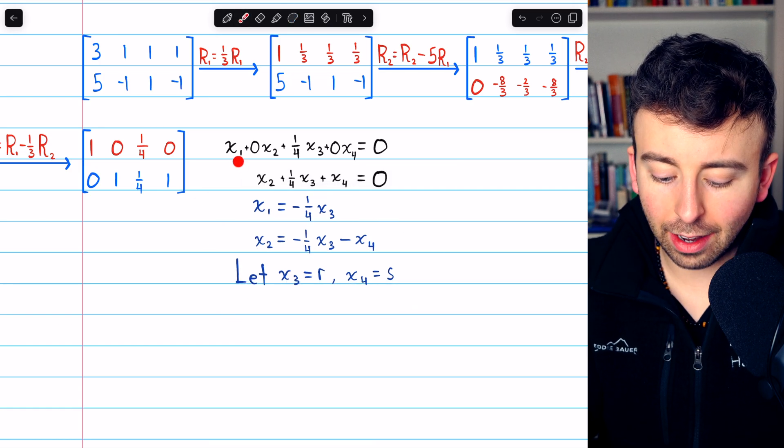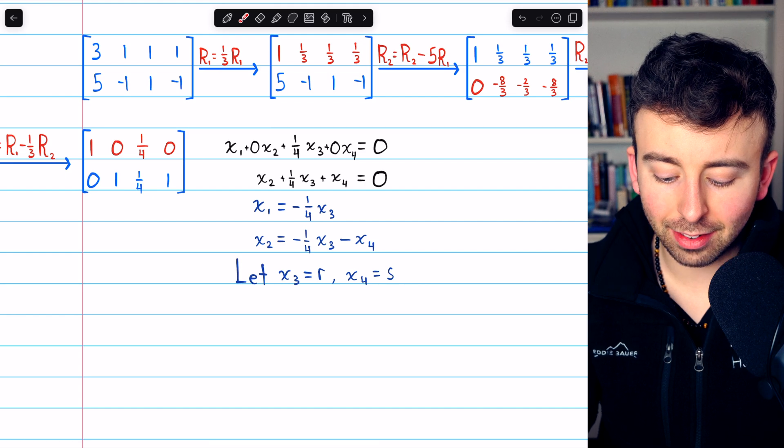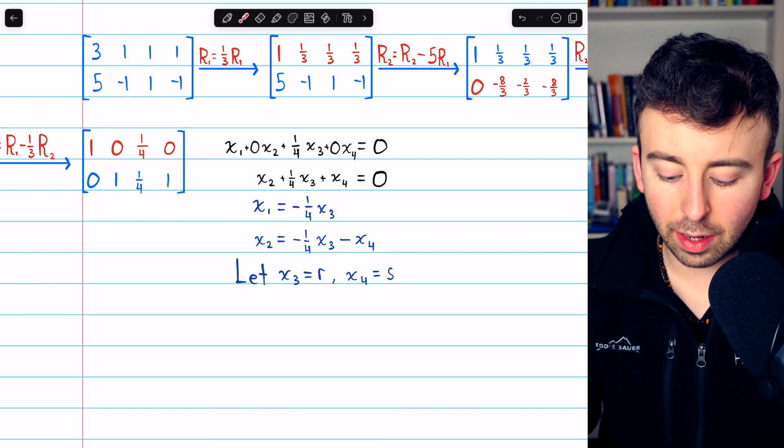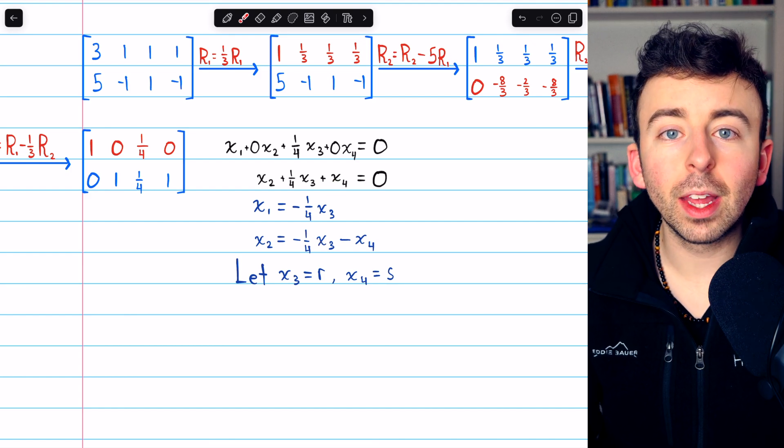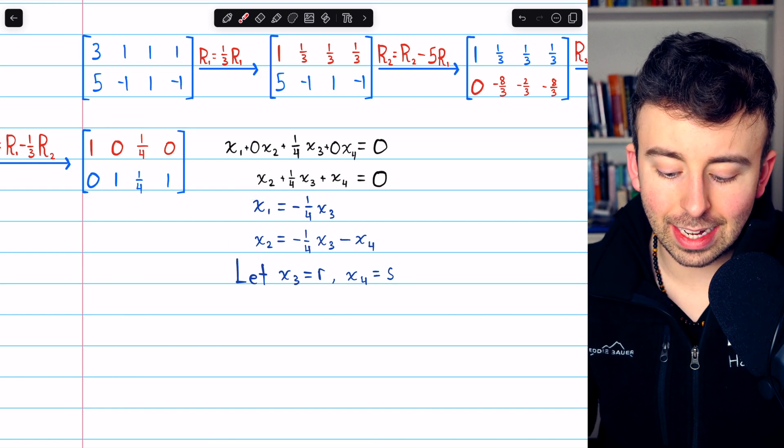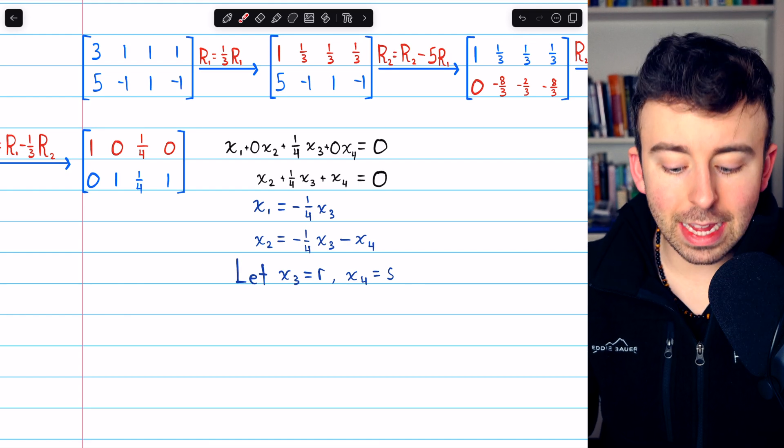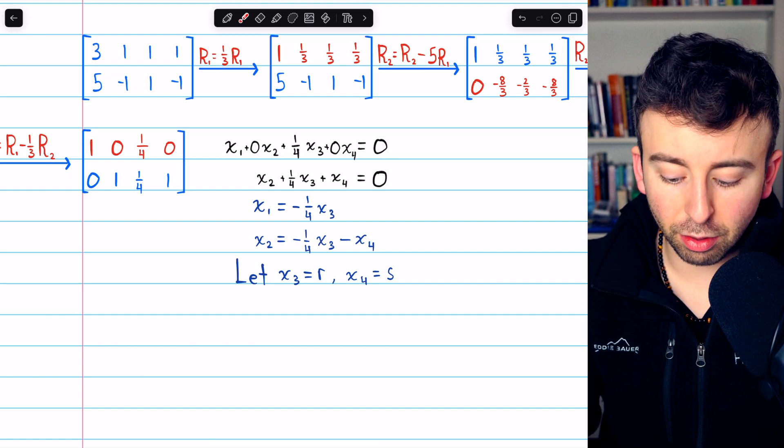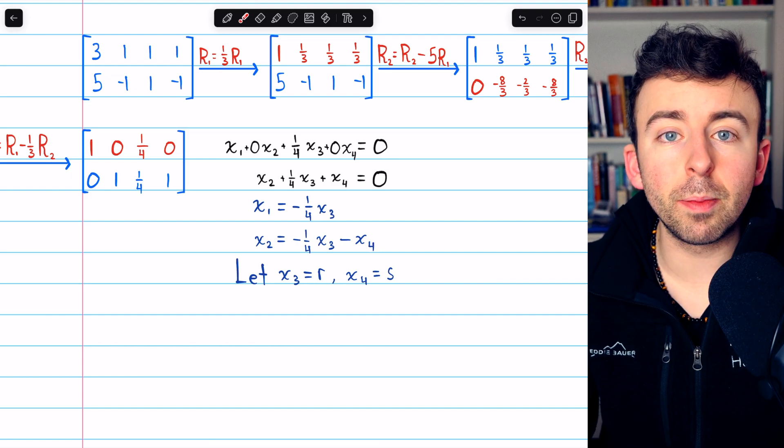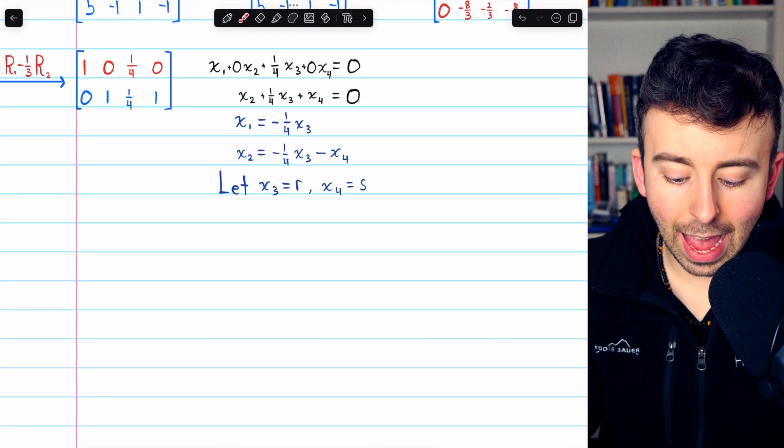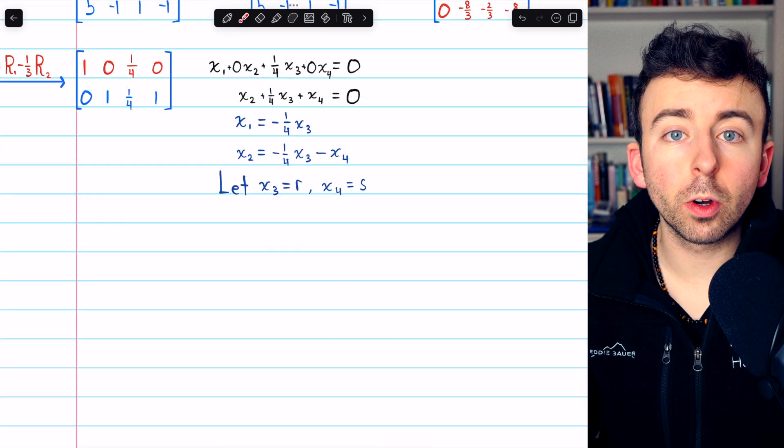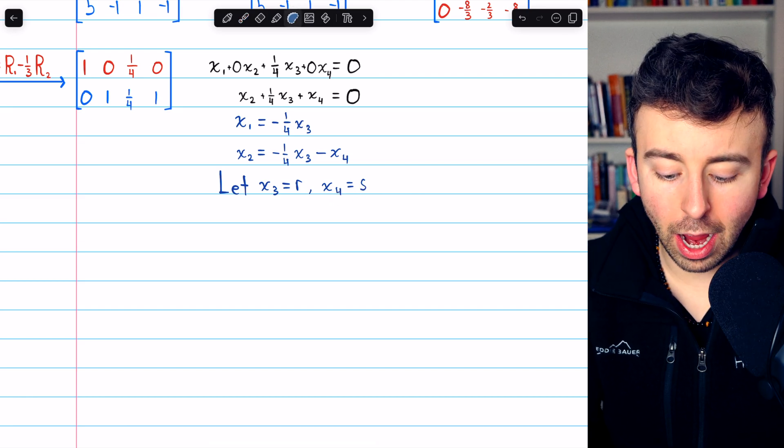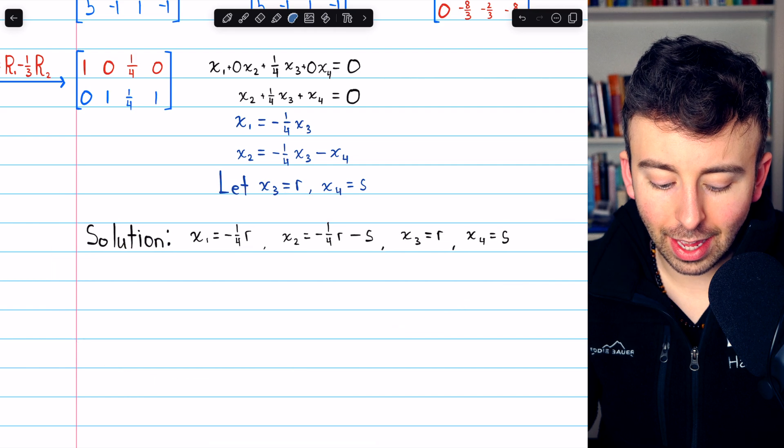We have that x1 equals negative a fourth x3 minus x4. Again, just solving for the leading variables. This means then that x1 and x2 are the only variables with restrictions. x3 and x4 are free to be whatever they please. Thus, letting x3 equal some parameter r and x4 be parameterized as s, we can describe the complete solution set like this.